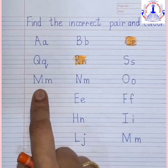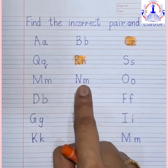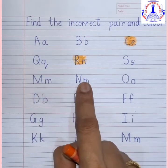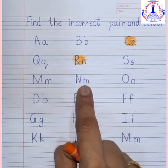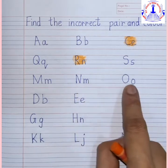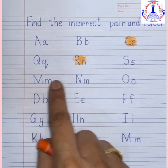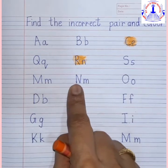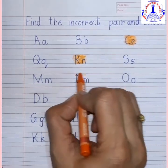Come to the third line: capital M, small m, capital N, small n — now this is M and N, so is this the correct pair? No. Now let's see: capital O, small o. So from this row, this is the incorrect pair — here we are going to color it.